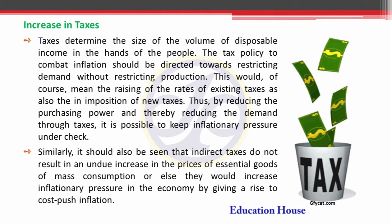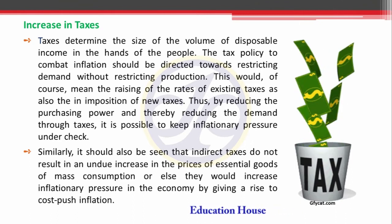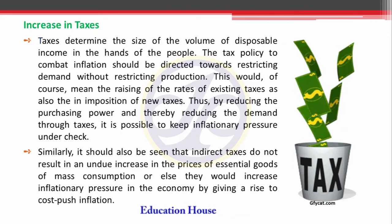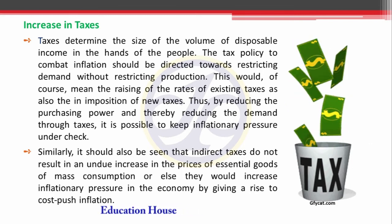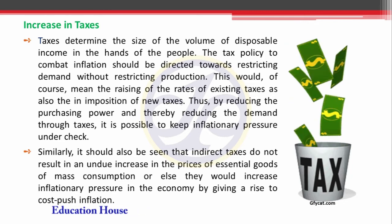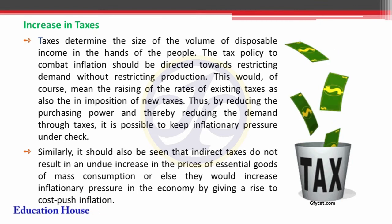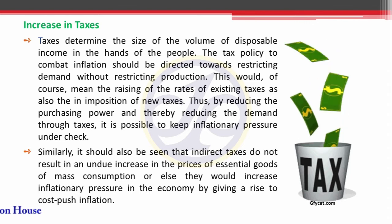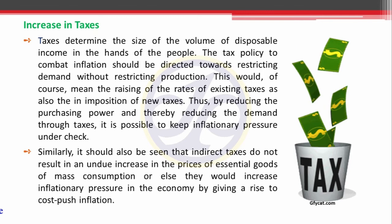Another factor: Increase in Taxes. If the government raises taxes on the people, then automatically the consumption capacity or purchasing capacity of the population reduces. So people are not demanding more and more goods, and the government can earn the benefit of increased income. Supply of money is diverted from market to government and automatically demand level reduces, purchasing power capacity of consumers reduces, and inflation is controlled.